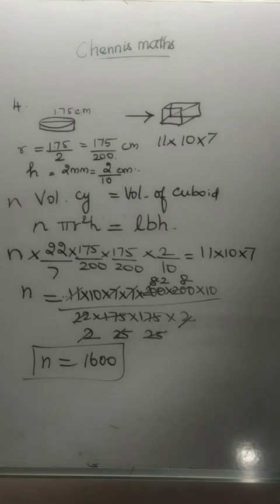The number of coins needed to make one cuboid of that shape is 1600 coins.